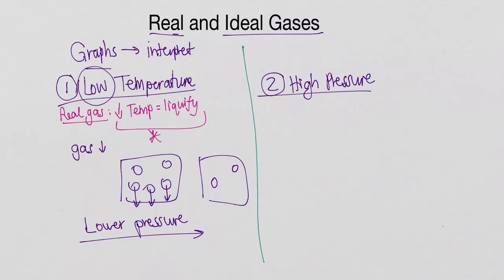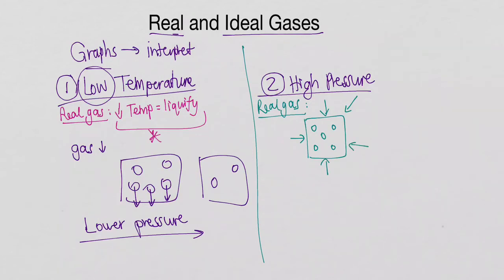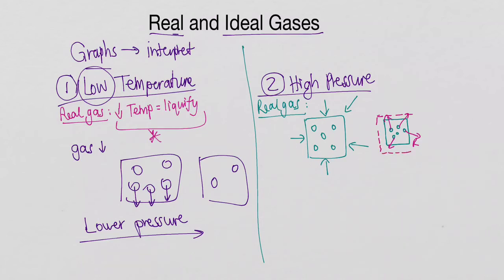Now let's look at what happens at high pressure with a real gas. Imagine we've got a container with five gas particles and we increase the pressure significantly, which means the volume decreases. Now I draw the container smaller — the five particles are now much, much closer together. In a real gas situation, these gas particles experience repulsive forces that push them away from each other.